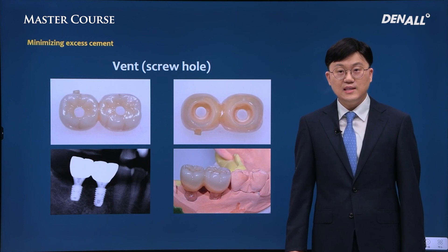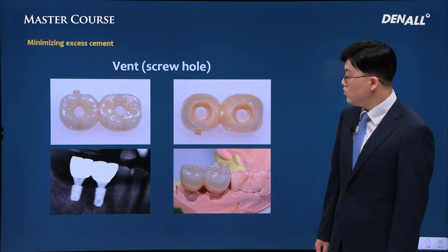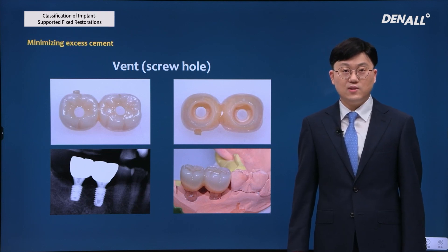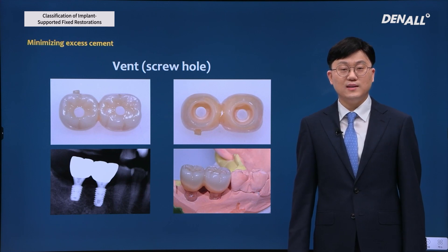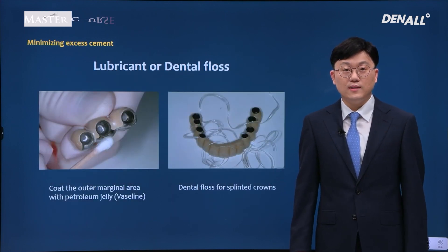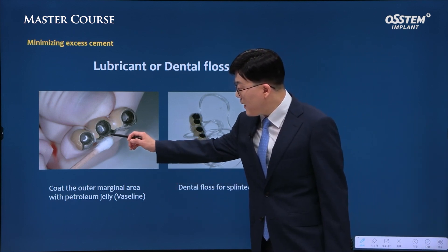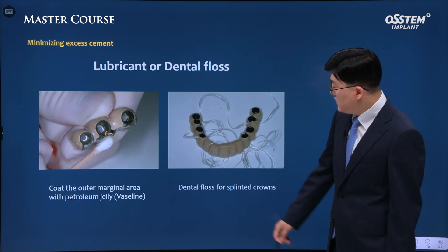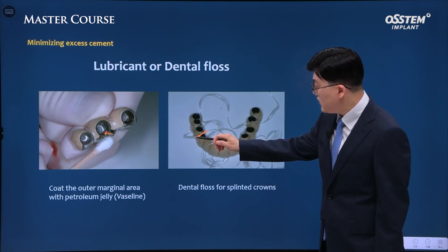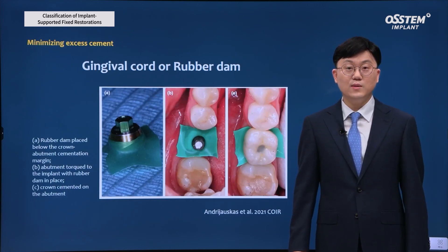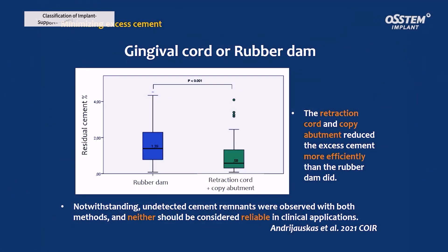Among the three prosthesis types, in the case of ER type prosthesis, the hole serves as a pathway to loosen the screw but also as a pathway for the cement to get out, making it meaningful to use ER type prosthesis. Adding Vaseline on the margin or using floss can be meaningful — when you apply Vaseline, make sure it does not go over the margin point, and when using floss during bonding, make sure the floss does not get between the abutment and crown. You can also use gingival cord and rubber dam, though according to a recent study, retraction cord and practice abutments show better results than rubber dam alone.